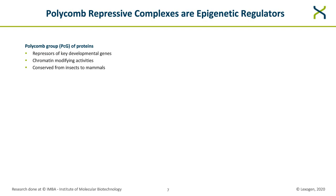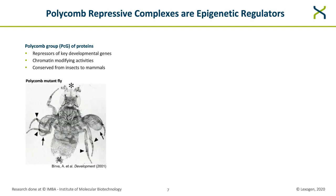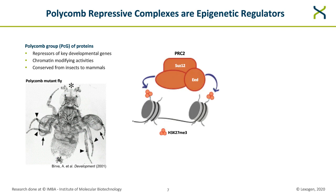I'll briefly introduce the Polycomb system, which is composed of several genes encoding proteins that bear chromatin-modifying activities. They are very well-conserved from insects to mammals, and they are known to be repressors of developmental genes, as exemplified in this picture of a Polycomb mutant fly that has legs instead of antennae. Polycomb proteins assemble into two main families of multi-subunit complexes: Polycomb repressive complex one and two, or PRC1 and PRC2.